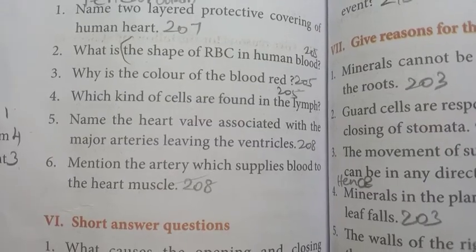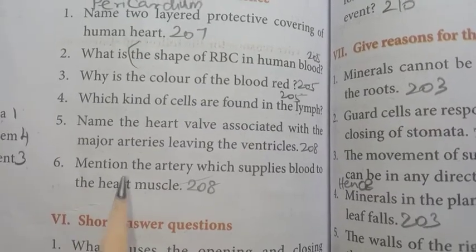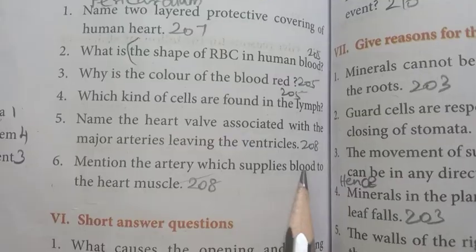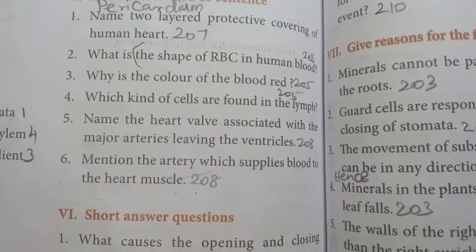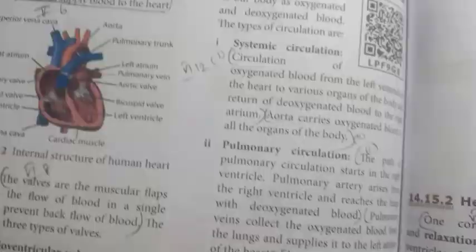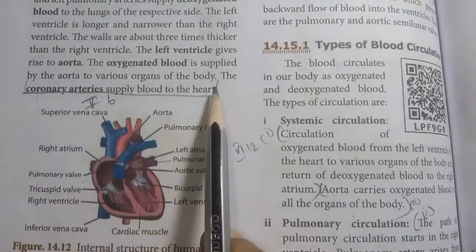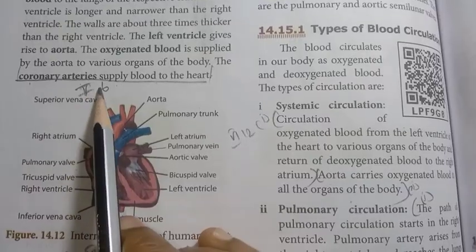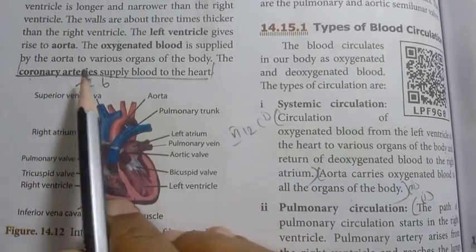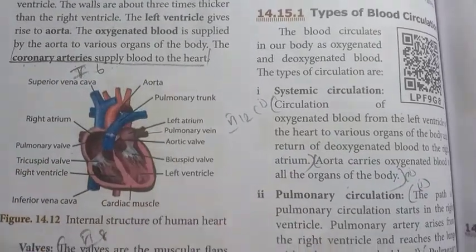Then mention the sixth one: mention the artery which supplies blood to the heart muscle. Page number 208. Coronary arteries supply blood to the heart. Coronary arteries supply blood to the heart.